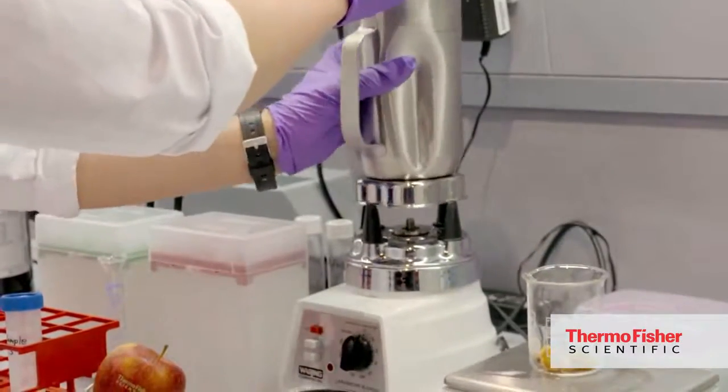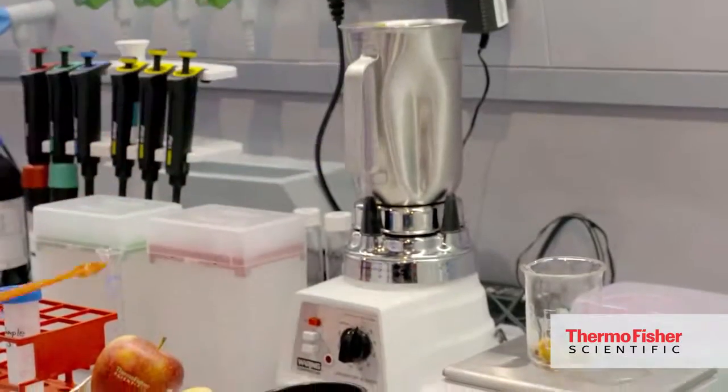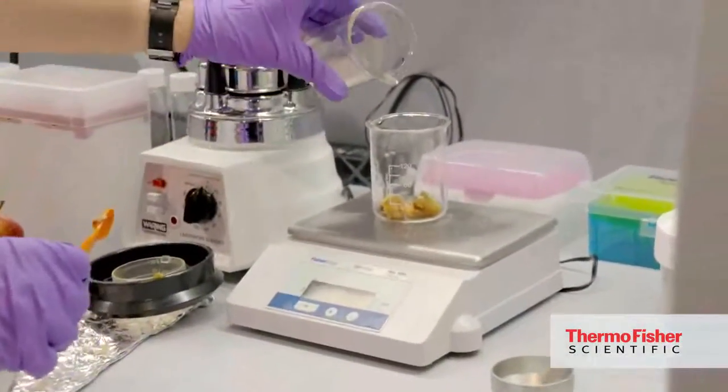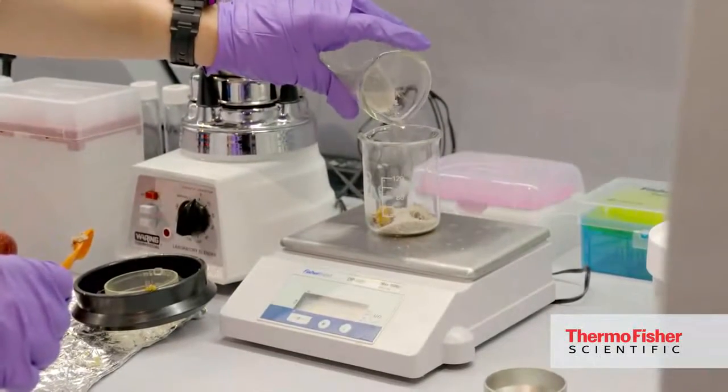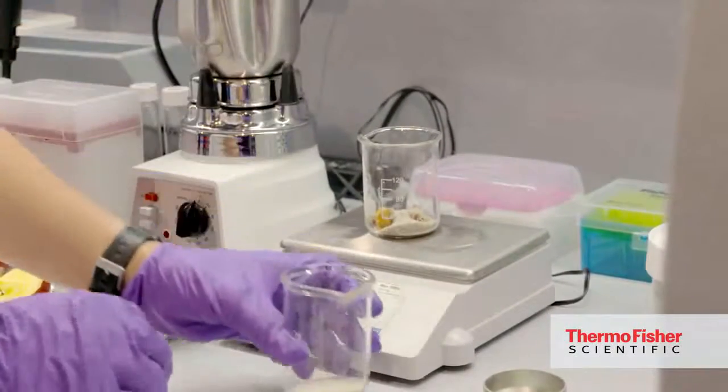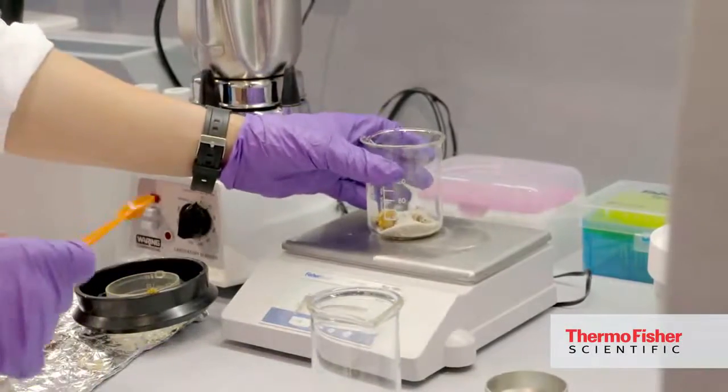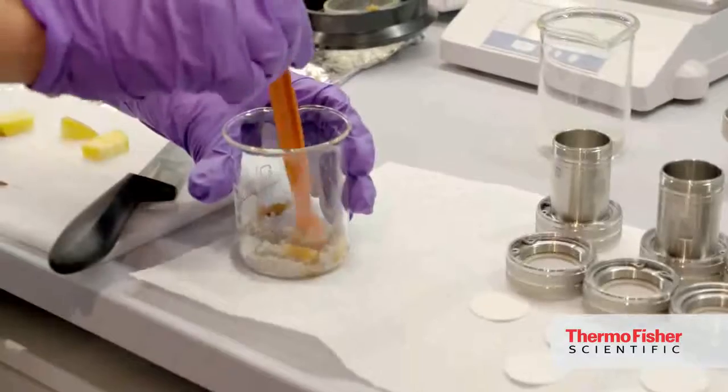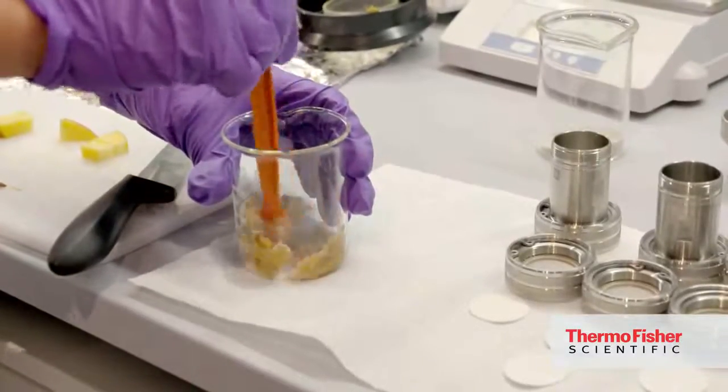And for the accelerated solvent extraction we need this Pergant. This has to be added right now in a ratio of more or less four sample units to one Pergant unit. This is what was done. This has to be mixed, carefully mixed, so that it's more or less homogeneous.